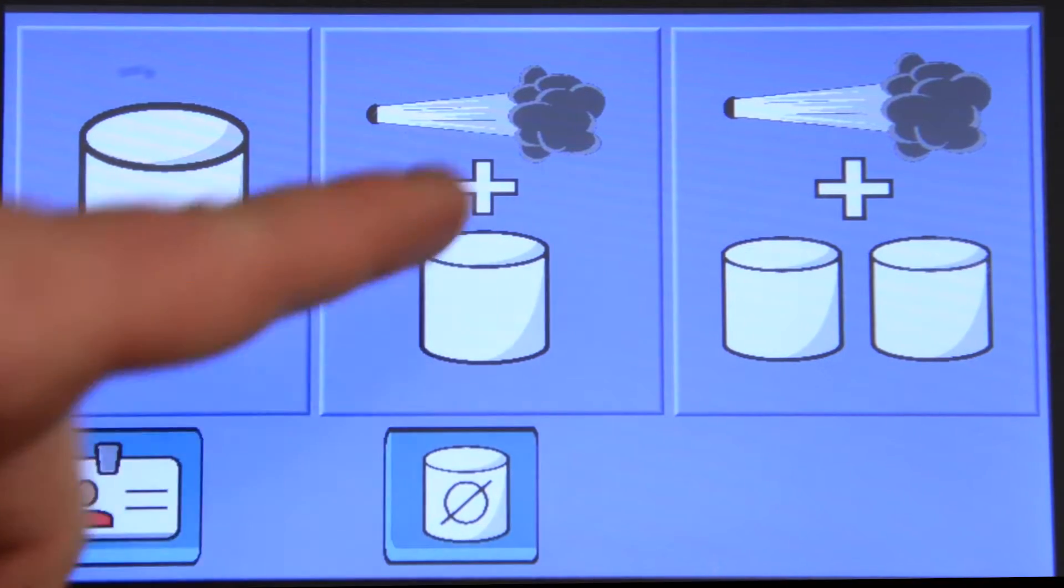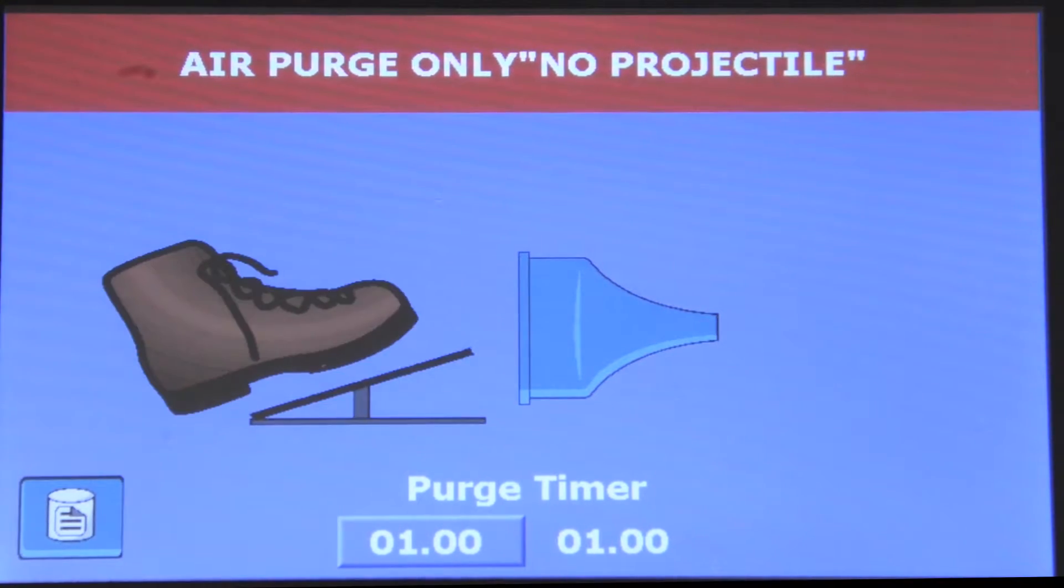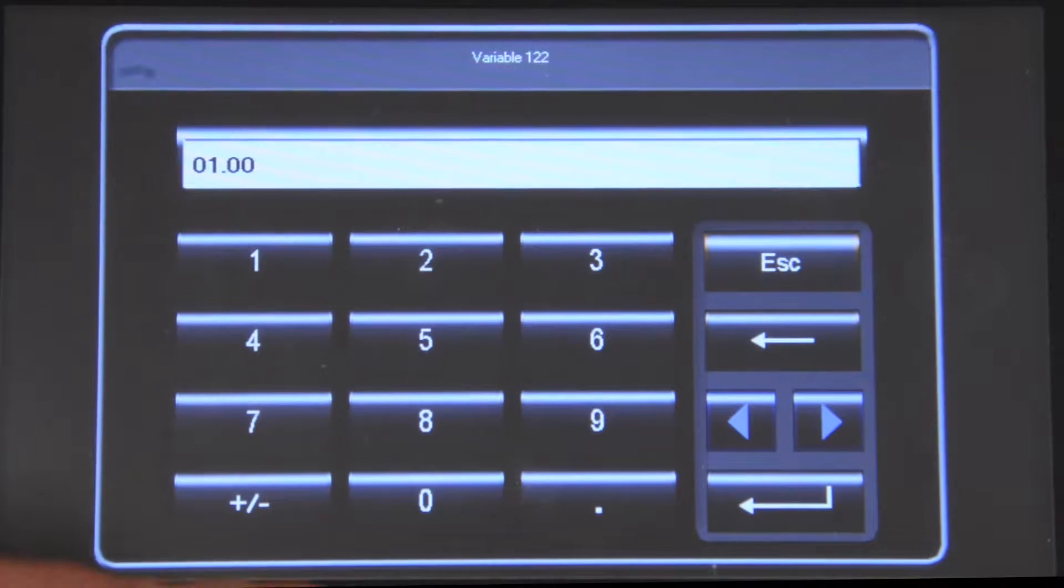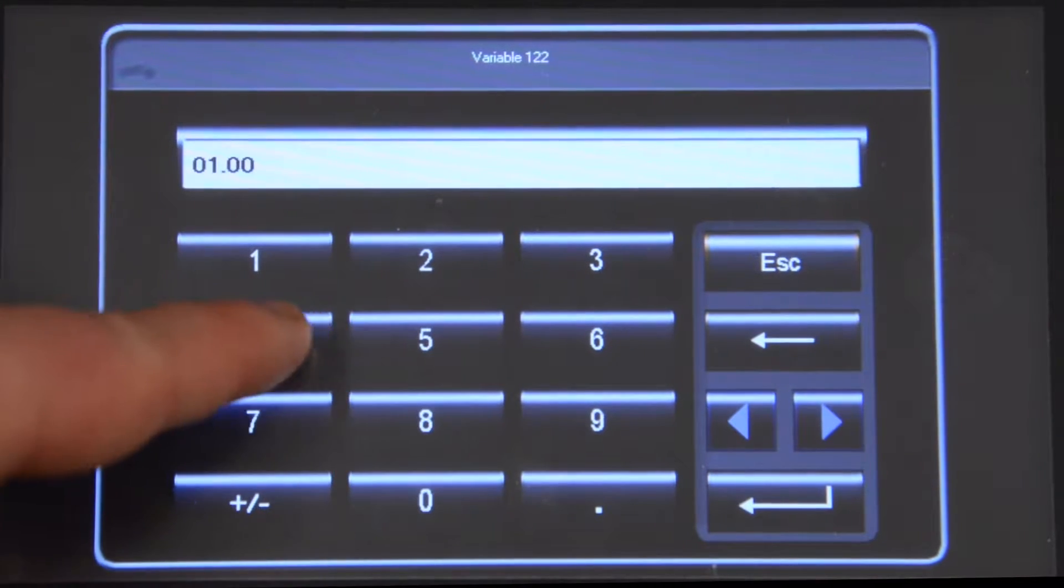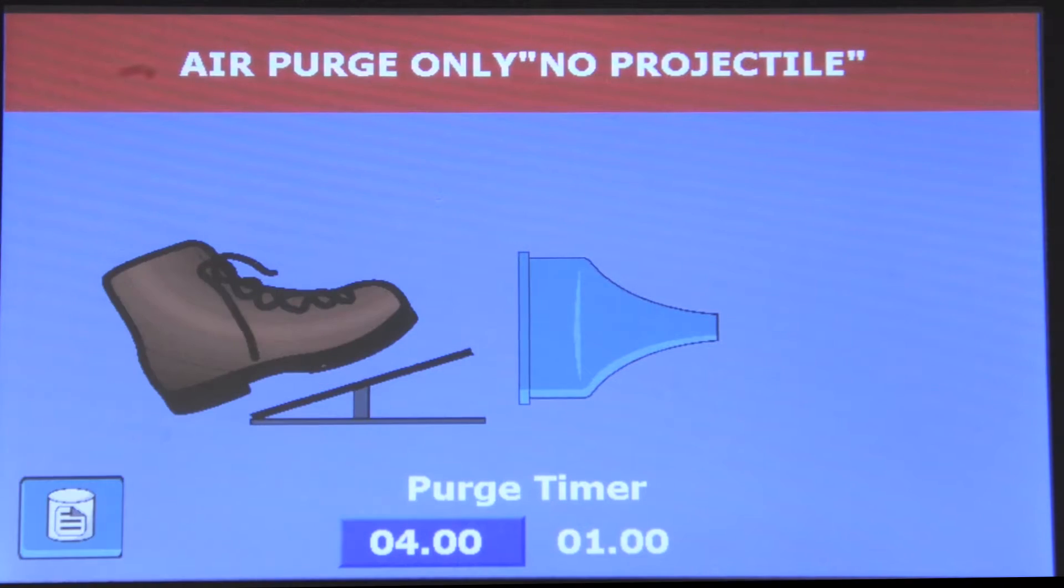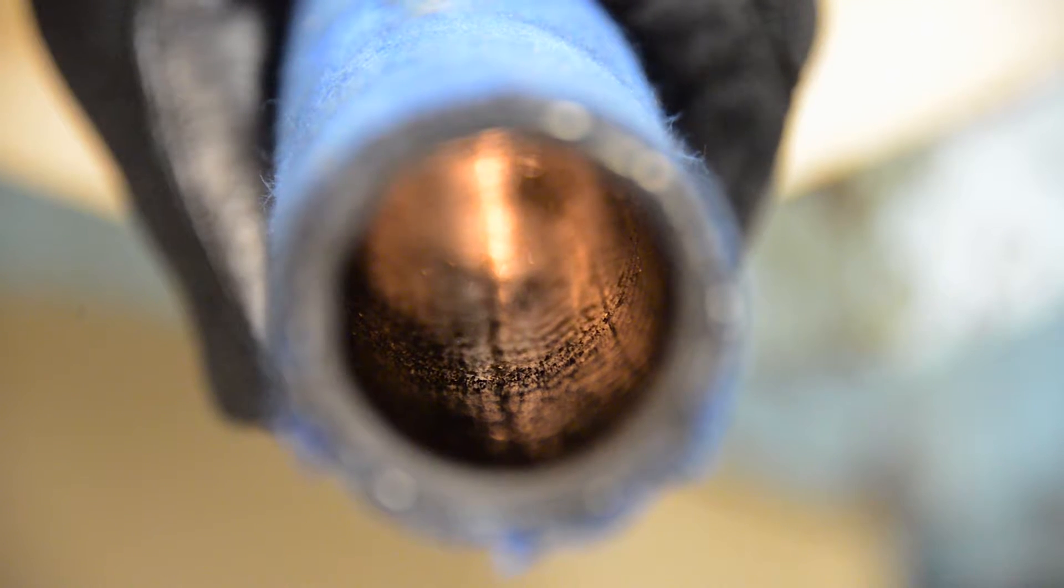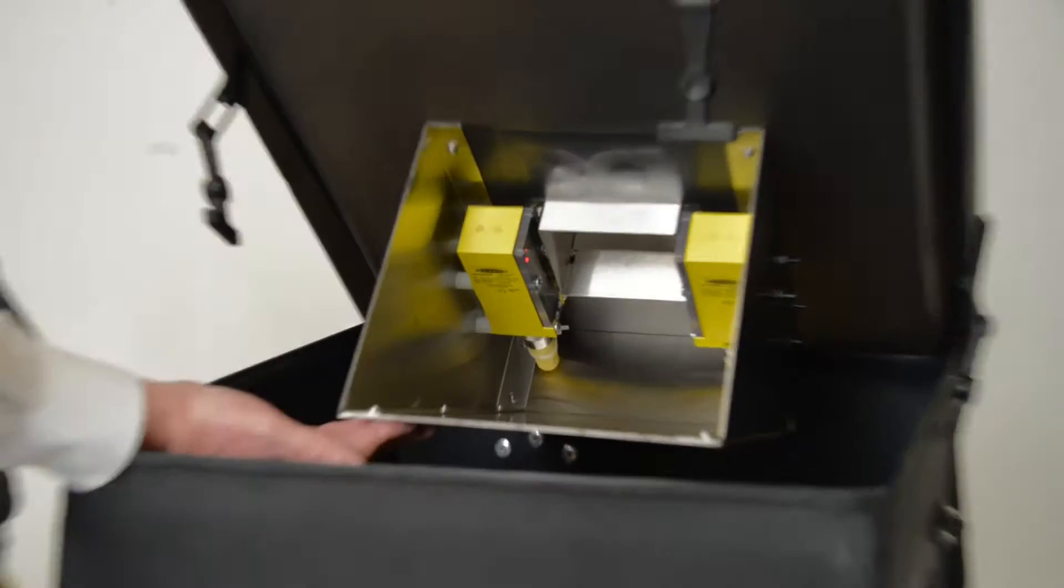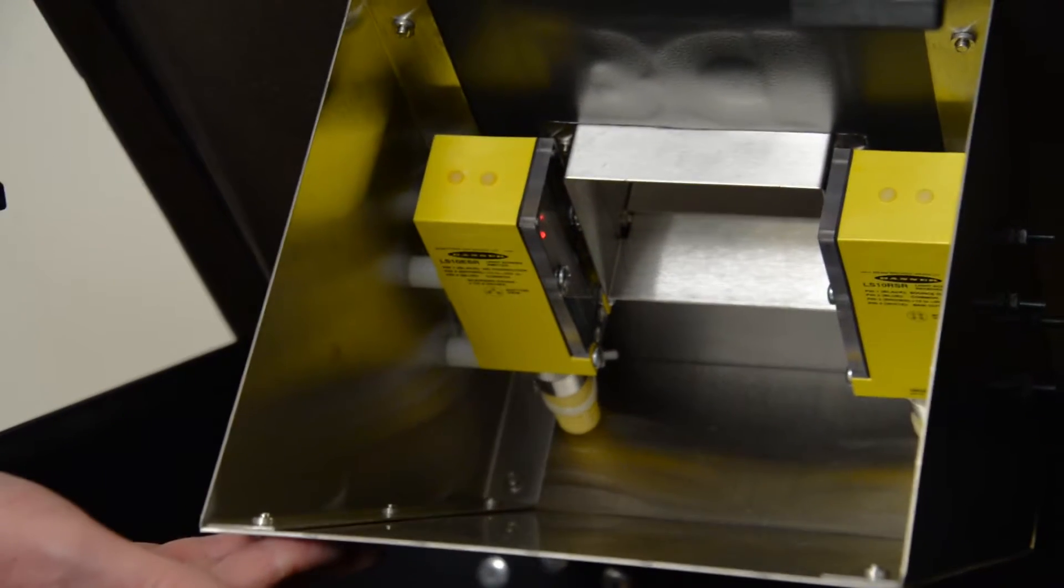The air purge timer is preset at 3 seconds. Additional time can be added by touching the air purge timer box, adding seconds and then pressing Enter. The air purge will allow large particles of contamination to pass through the verification sensors without triggering a verification.